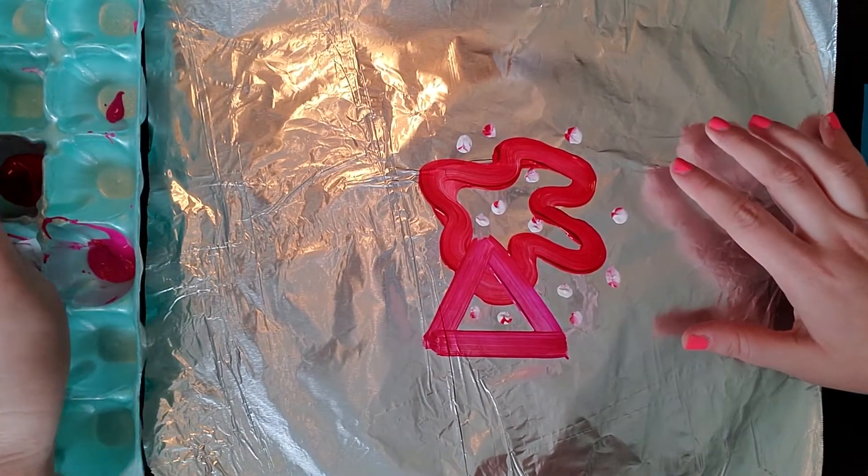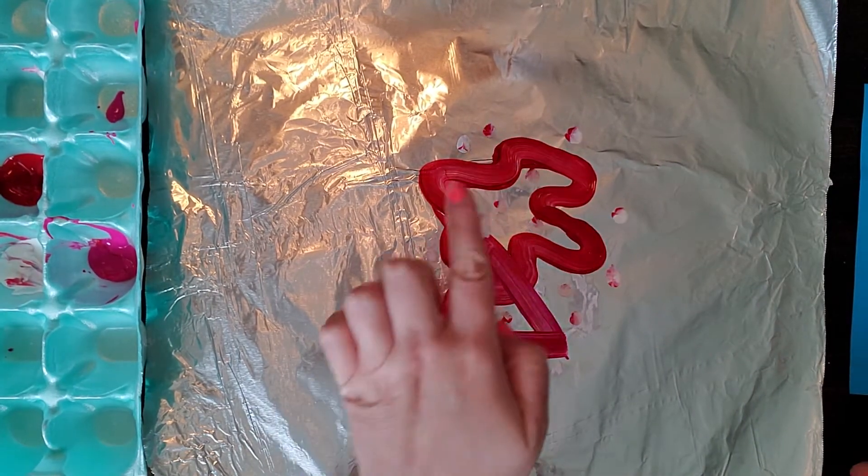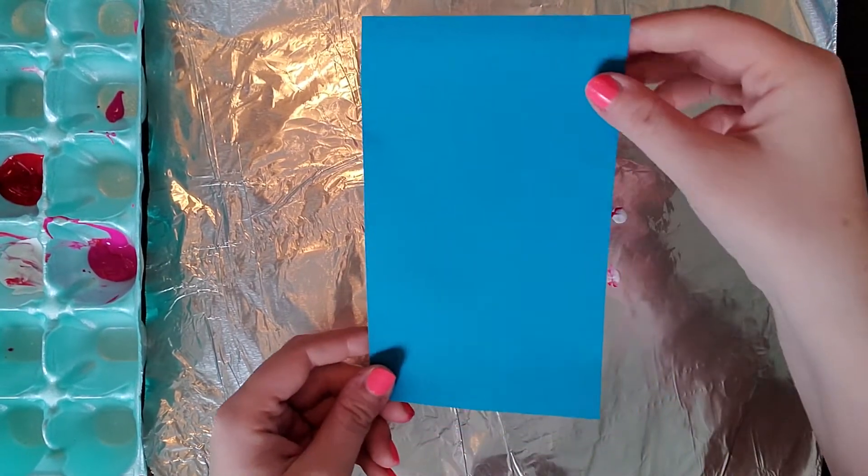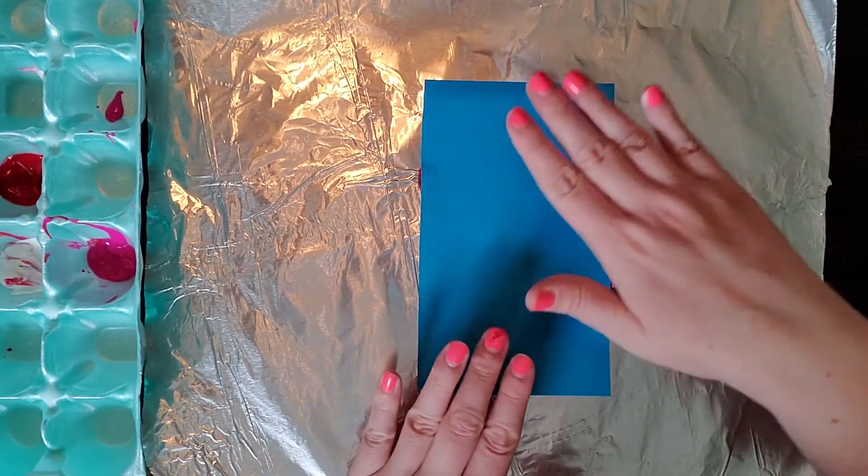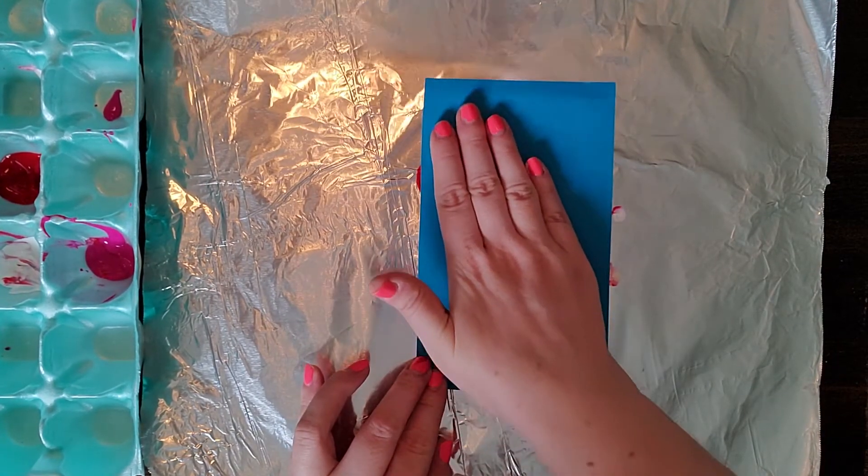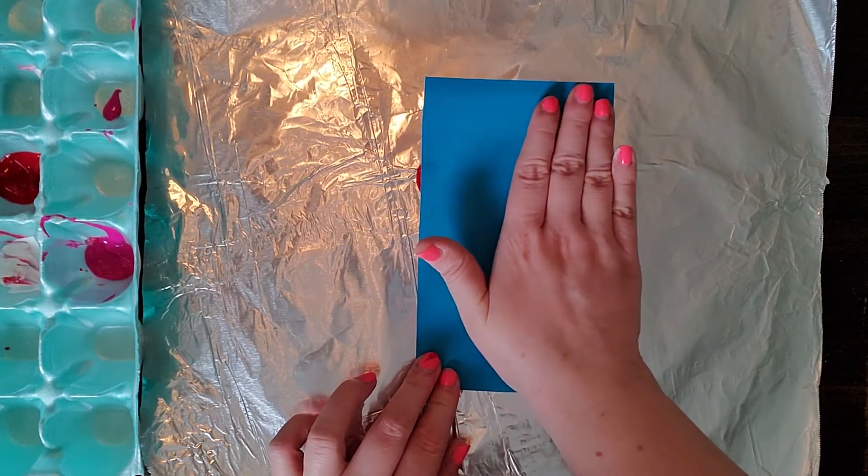And the key is to catch this while it's still wet. So while my paint is still wet, I'm going to take my paper, and I'm carefully setting it on top. And now I'm going to gently rub. I'm applying even pressure.